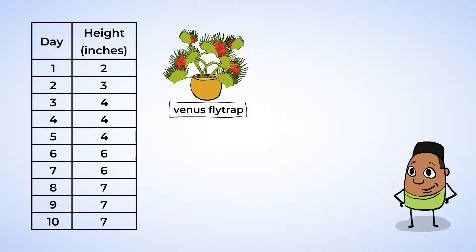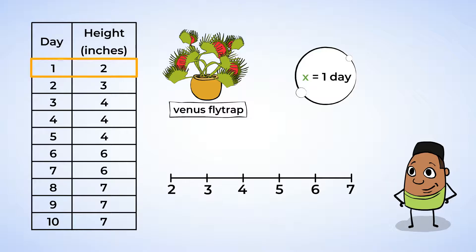First, figure out the smallest and largest measurements. The smallest is 2, and the largest is 7. We need a number line from 2 to 7. Each X on this number line will represent 1 day. Now it's time to plot the data. Let's go down row by row and put an X for each day. On day 1, the Venus flytrap was 2 inches tall. Day 2, 3 inches. Day 3, 4 inches. Day 4, 4 inches. Day 5, also 4 inches.